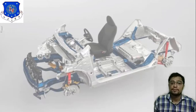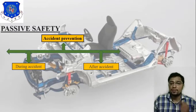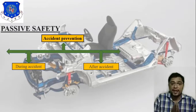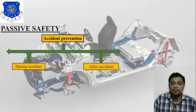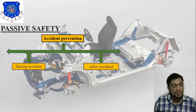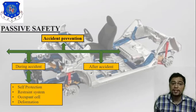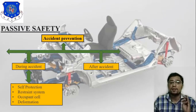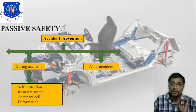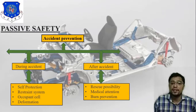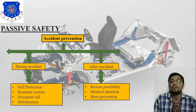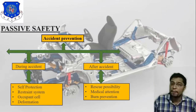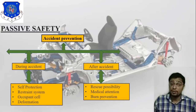In passive safety prevention there are two phases: during the accident and after the accident. During accident, four criteria apply: self-protection, restraint system, occupant safety, and deformation. After the accident, we consider rescue possibility, medical attention, and fire prevention. That is what passive safety covers.